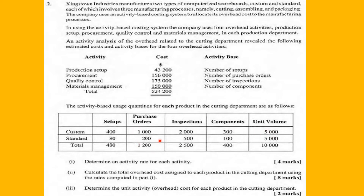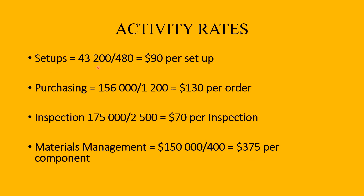To calculate the activity rates, we take the total overhead cost for each activity and divide it by the total of the cost driver or activity base. For setups, we take the total overhead cost for setups and divide it by the total number of setups to get ninety dollars per setup. That is the activity rate — the rate we will be charging to each product for a setup.